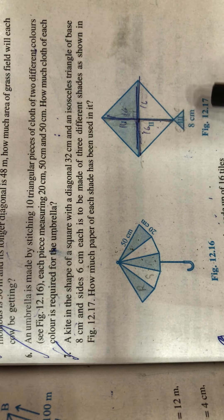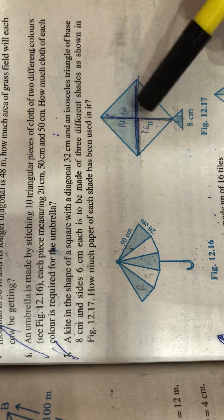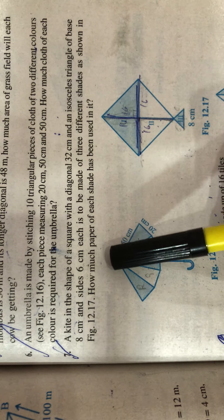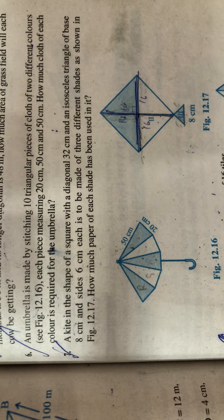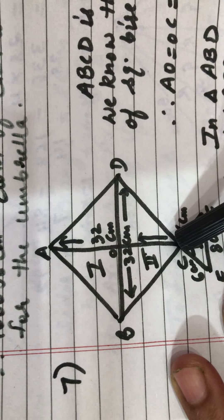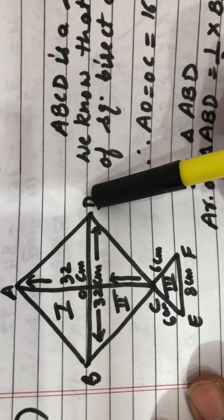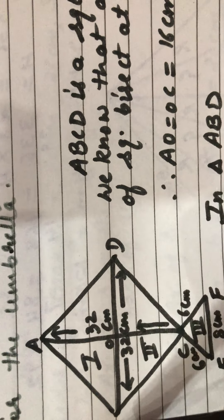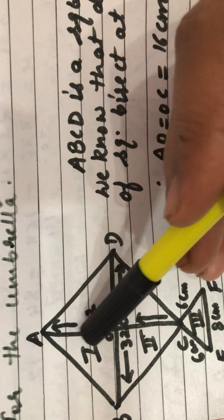We have three parts: first triangle, second triangle, and third triangle. We need to find how much paper of each shade has been used. Looking at the figure, the square is named ABCD with diagonals of 32 cm each. Since the diagonals of a square bisect each other at 90°, AO = OC = 16 cm. The diagonal BD = 32 cm.